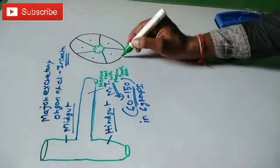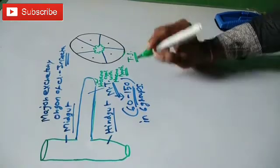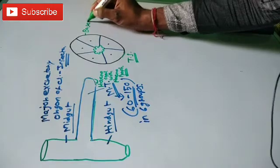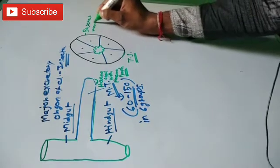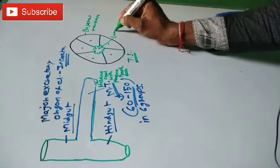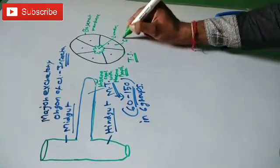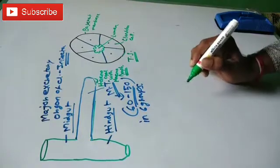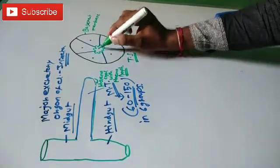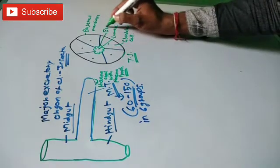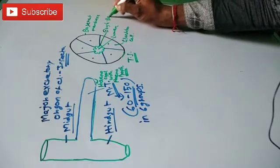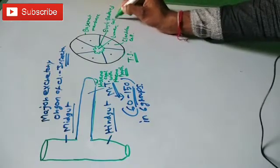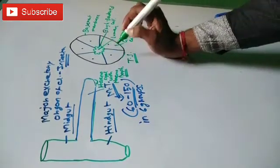If you see the structure in transverse section, this is the basement membrane. This is the lumen, and this is the glandular cell. The lumen is covered by brush-bordered cells — that means the lumen is outlined by brush-bordered cells. This brush-bordered structure actually helps in the absorption function.